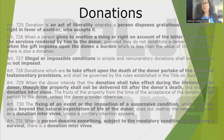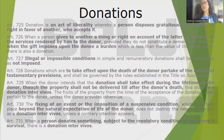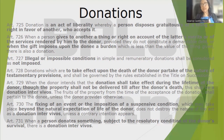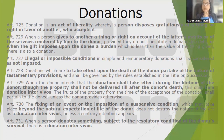In donations inter vivos, what is important is that the title or ownership of the property has already been transferred during the lifetime of the donor. It doesn't matter if the enjoyment of the fruits of the property is still with the donor or given to another person — it does not strip it of its classification as a donation inter vivos. Article 731: when a person donates something subject to the resolutory condition of the donor's survival, then there is a donation inter vivos.